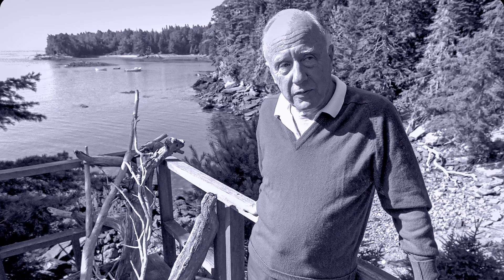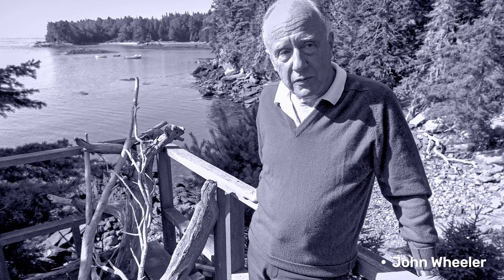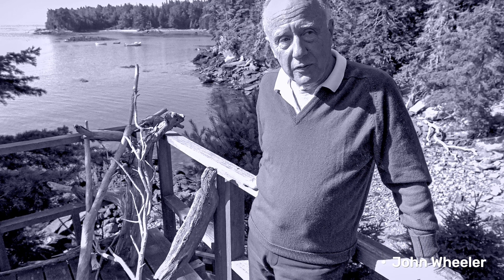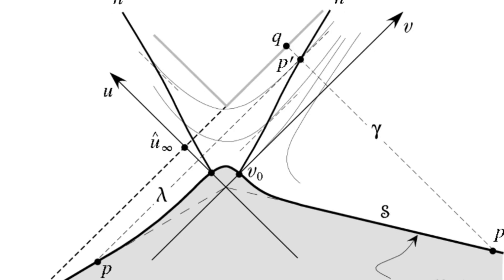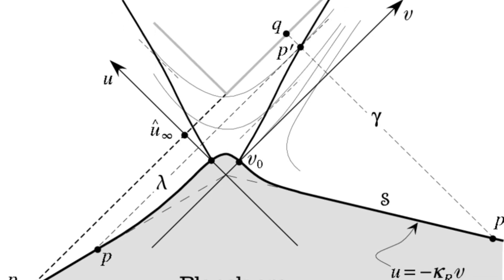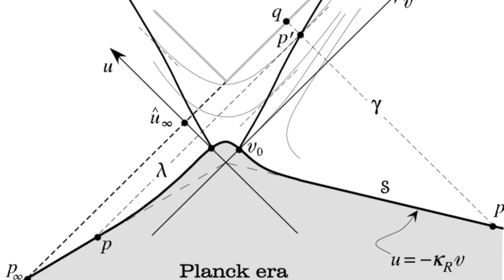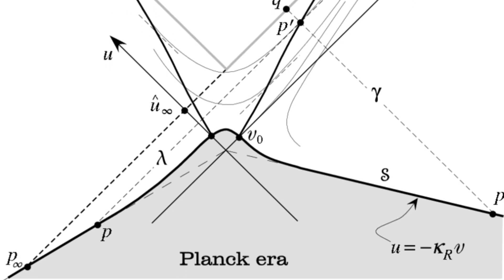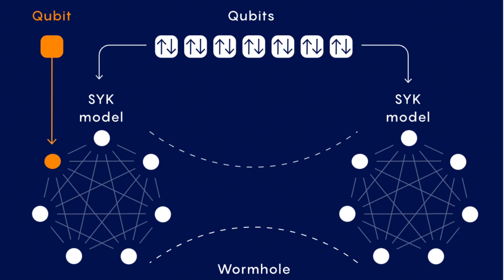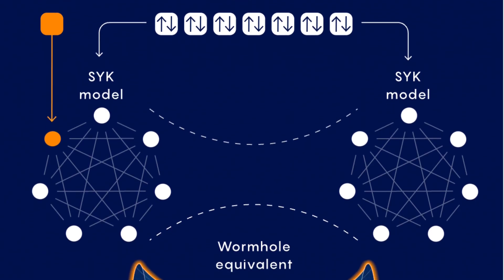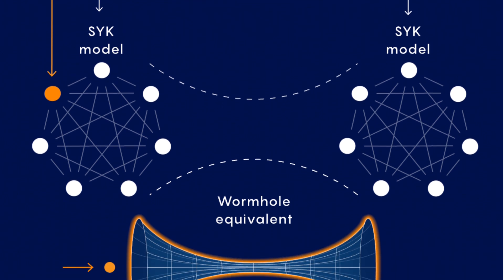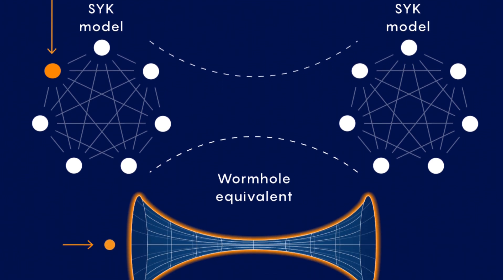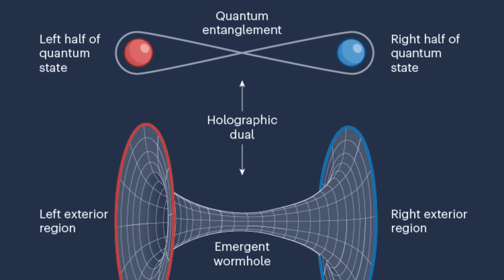Planck-scale wormholes are believed to be part of the quantum foam, a concept proposed by physicist John Wheeler, which describes the fluctuating nature of spacetime at the quantum level. These wormholes are incredibly tiny and would exist only for fleeting moments, making them impossible to traverse.